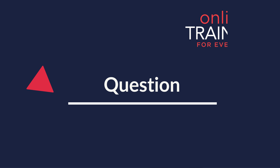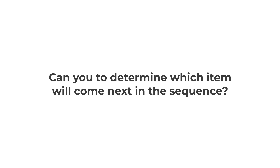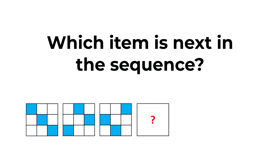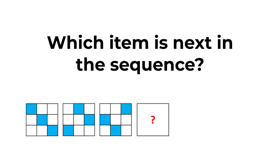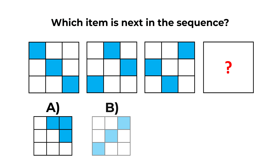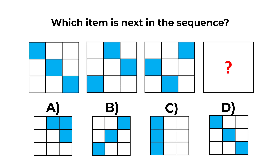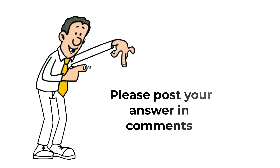And now I have a practice question for you. You need to determine which item comes next in the sequence. You're presented with 3 large squares, each containing 9 small squares inside of a different color. The fourth square is missing, and you have 4 different choices: A, B, C, and D. Give yourself 10 to 15 seconds. Make sure to post your solution and your rationale in the comment section of this video so I can give you feedback. Thanks for participating and good luck!